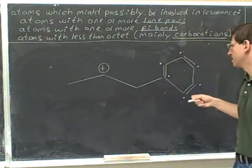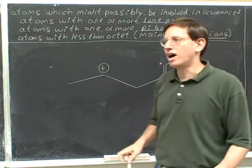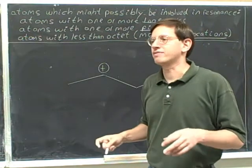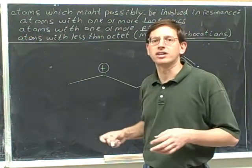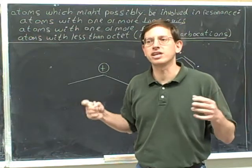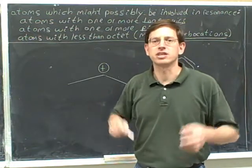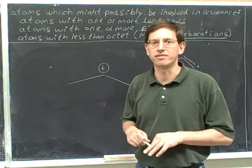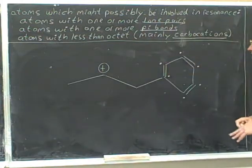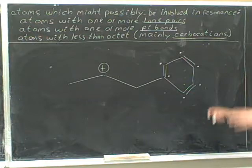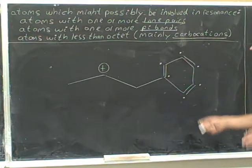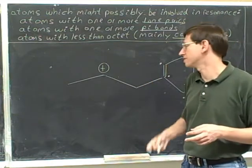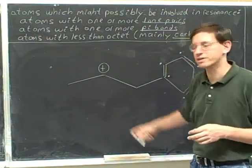Remember: it takes two to resonate. You need to have two atoms with these characteristics bonded to each other before you can get any resonance. So even though this is a carbocation, it's not bonded to anybody else who can participate in resonance, so we should not put a dot on this atom. You're never going to have a dot by itself — you always have to have at least two dots on adjacent atoms. The atoms that can participate in resonance are the six atoms in this ring. This carbocation is not a candidate for resonance.